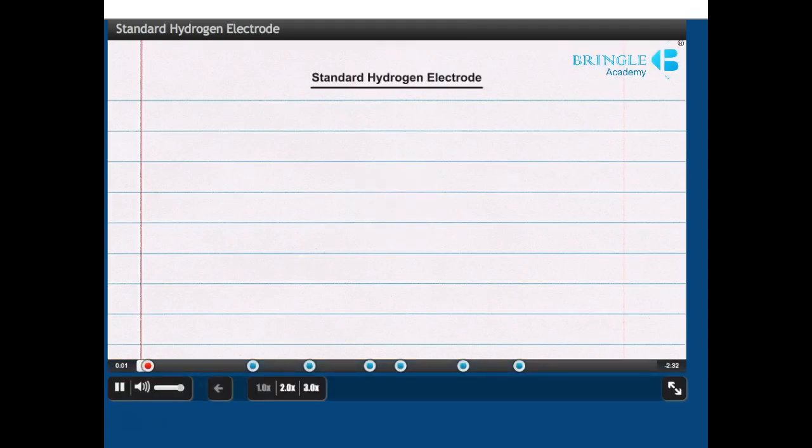Standard hydrogen electrode. Draw two vertical lines of about 8 cm in length in the center parallel to each other, having a gap of around 5 cm between them.